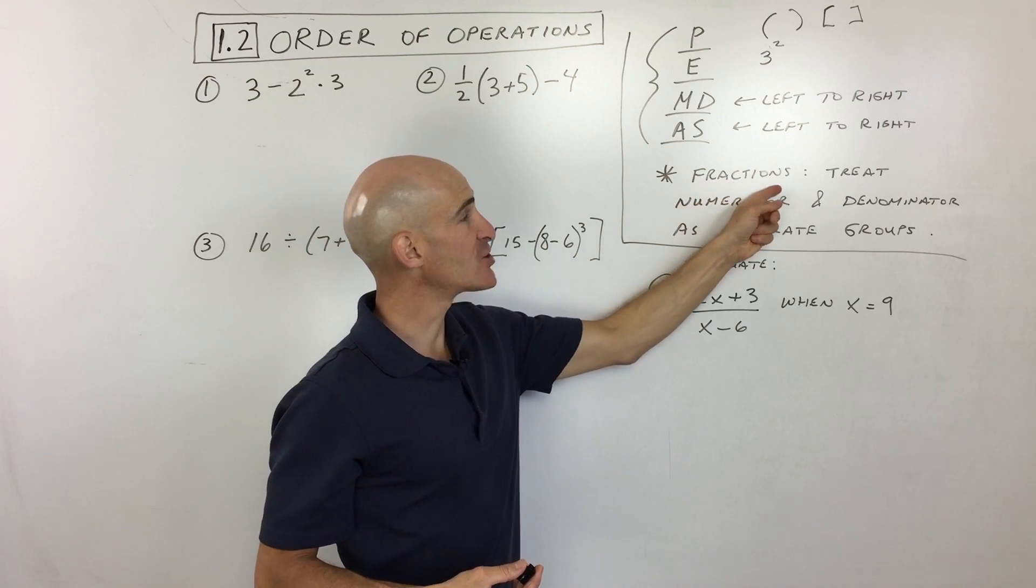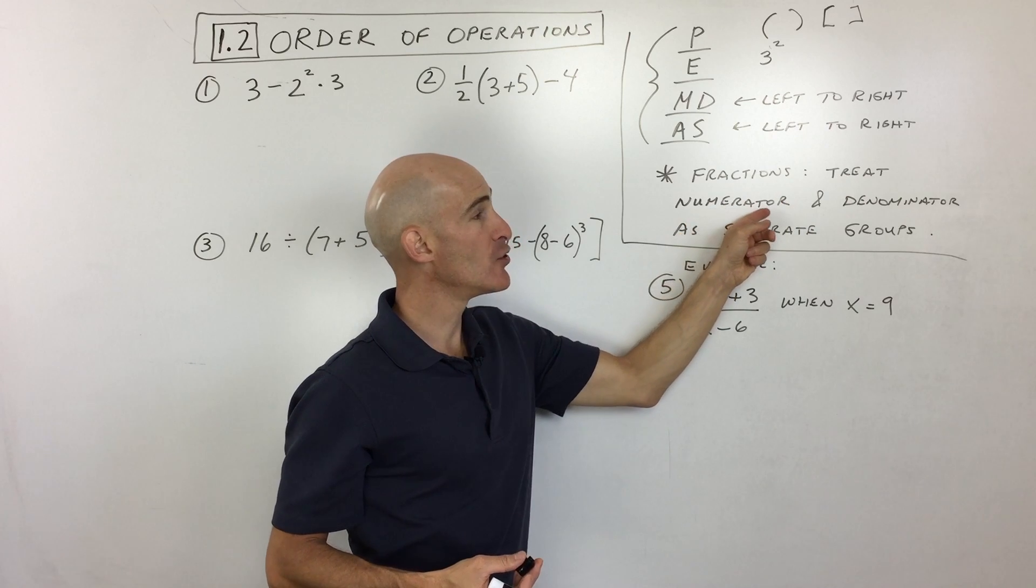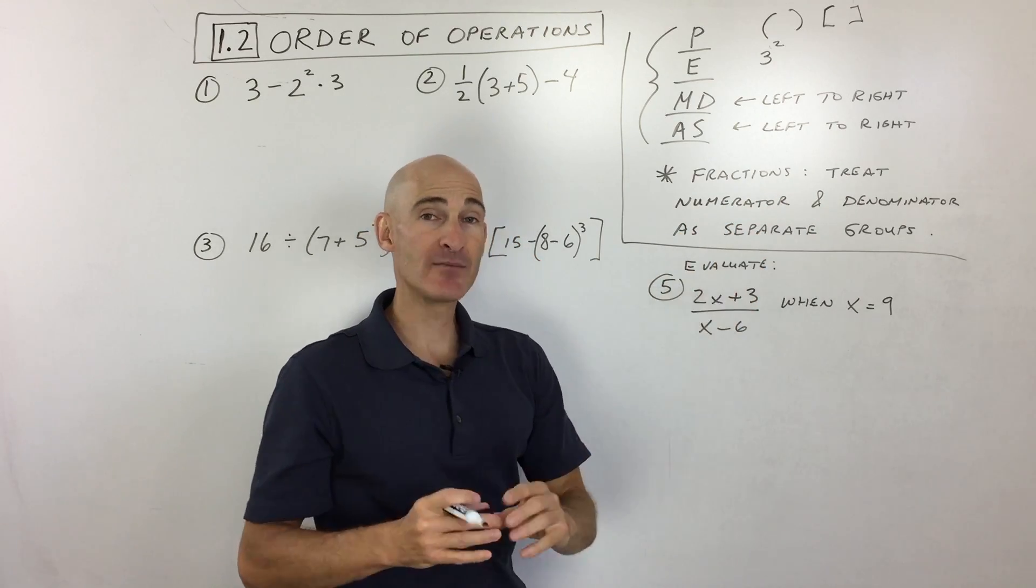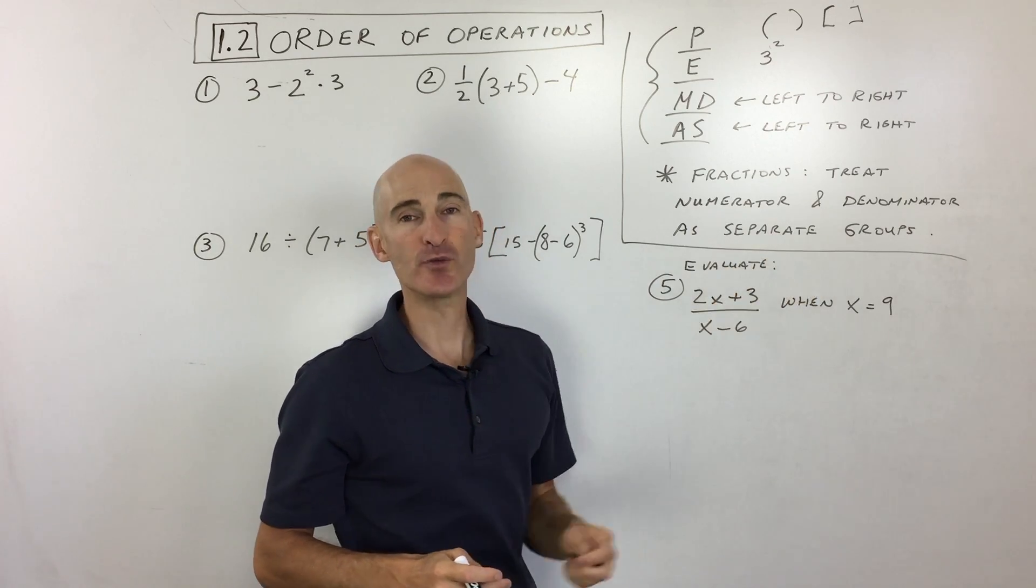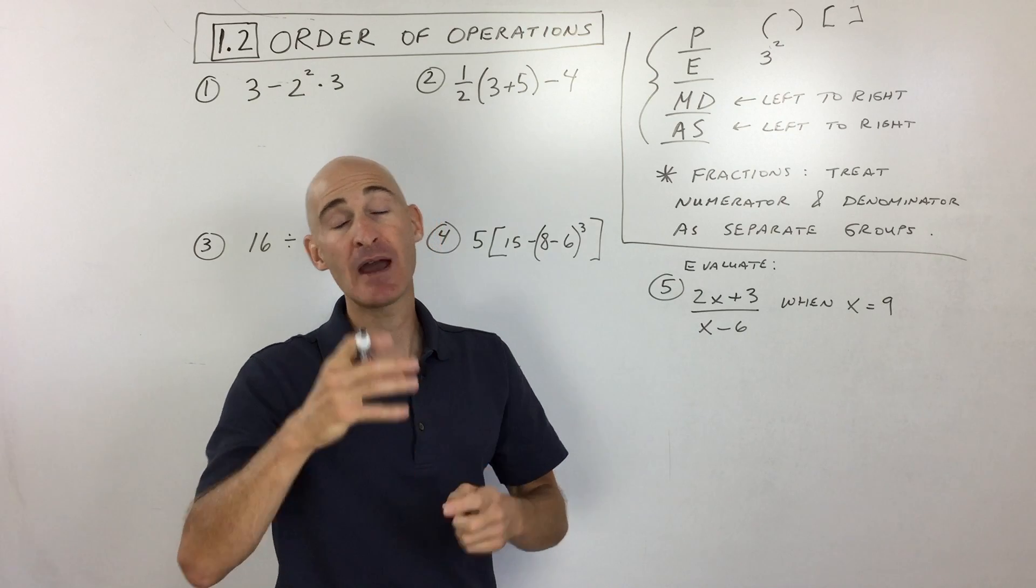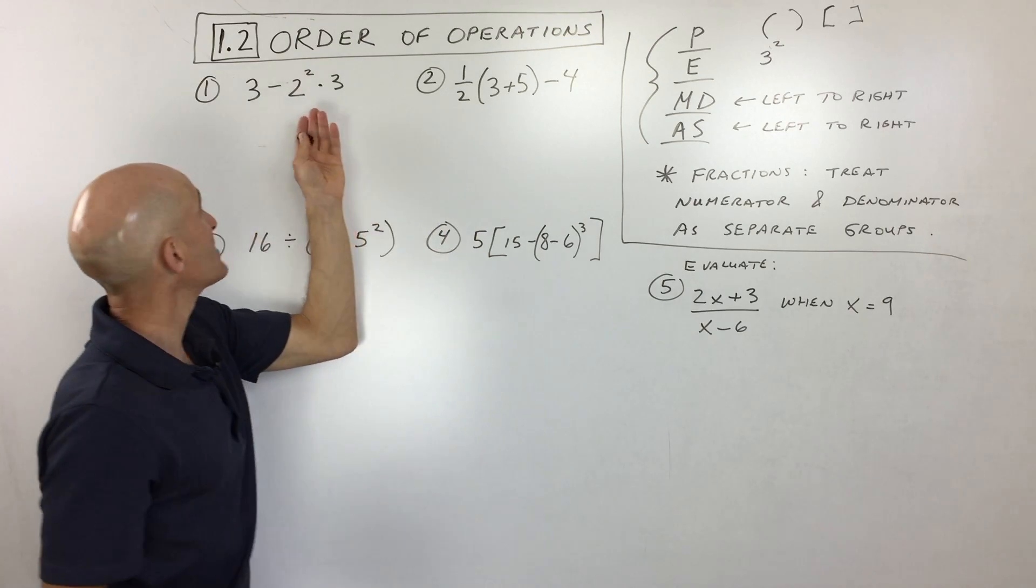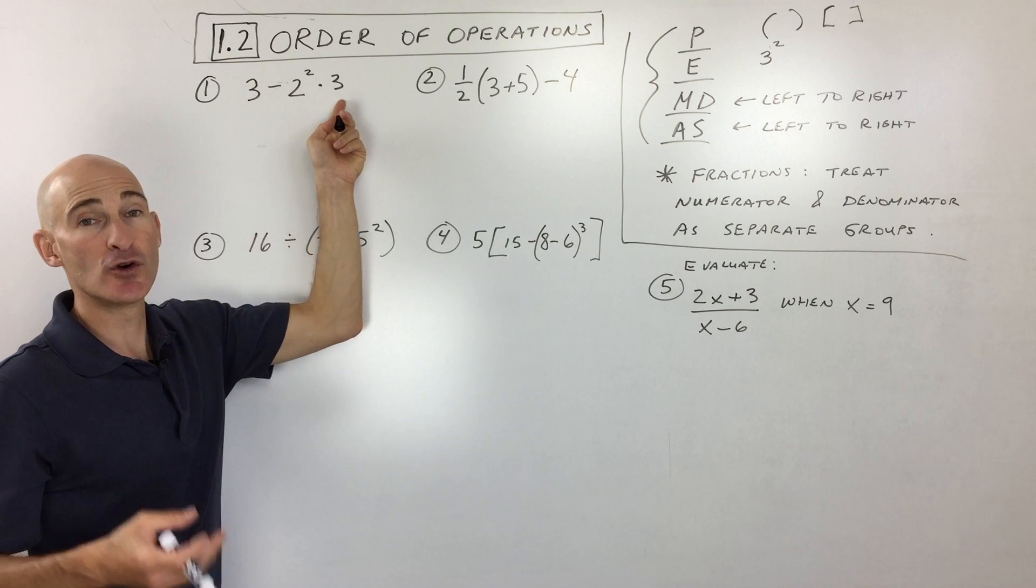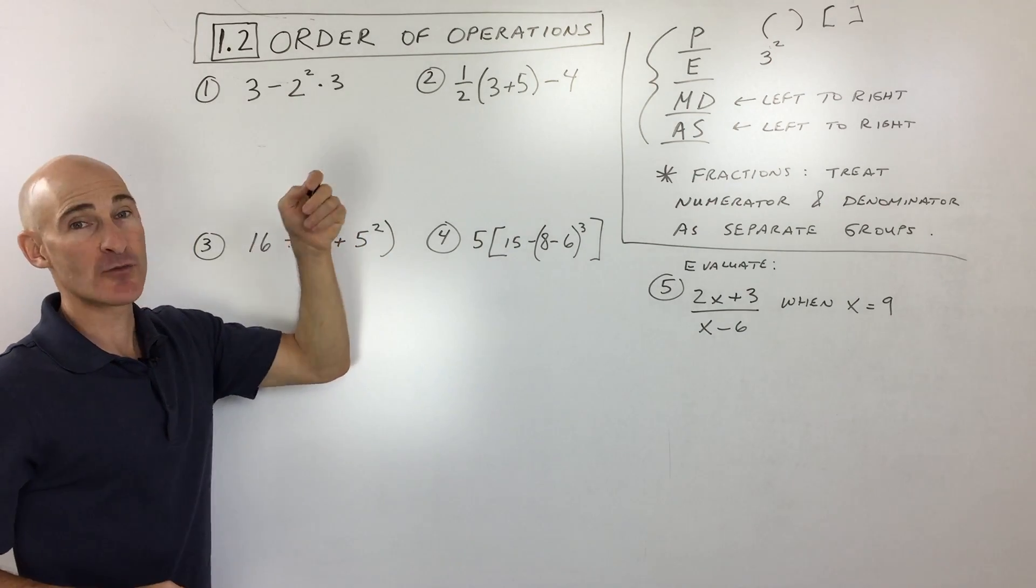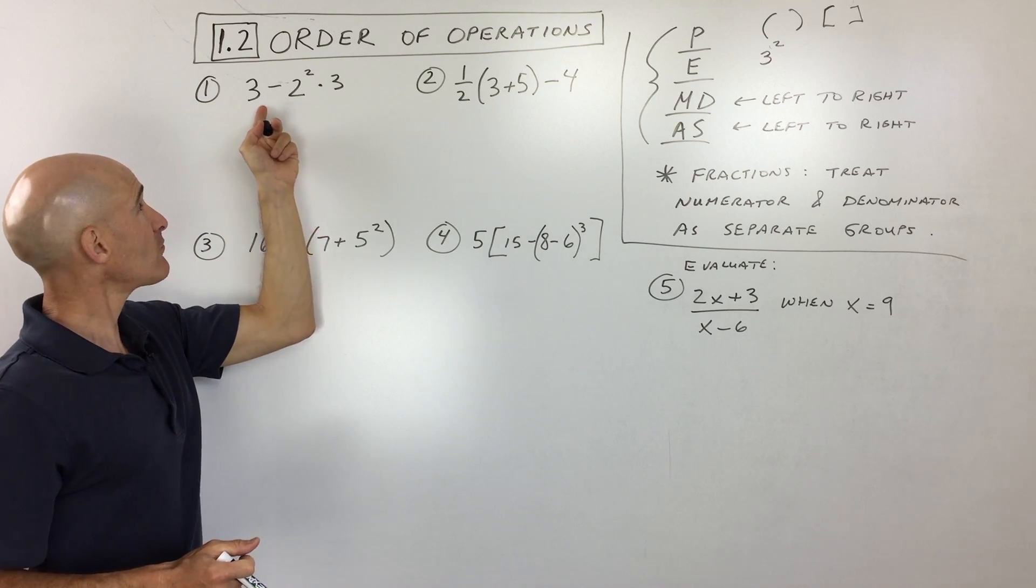One last thing: if you have a fraction, treat the numerator, the top part, and the denominator, the bottom part, as separate groups. It's almost like doing two problems. You do the top, then the bottom, then divide lastly. Let's go through five examples. Pause the video and try these on your own first, then we can go over them together.